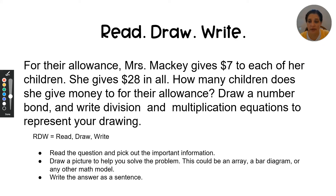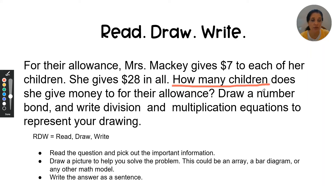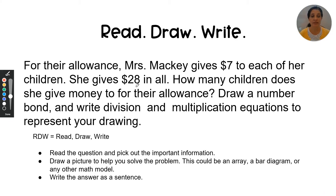For their allowance, Mrs. Mackey gives $7 to each of her children. She gives $28 in all. How many children does she give money to for their allowance? How many children? Draw a number bond and write division and multiplication equations to represent your drawing. $28 in all — that means the largest number goes at the top of my number bond. $7 to each of her children means I know how many in each group, but I don't know how many groups. Let's go to our Jamboard.